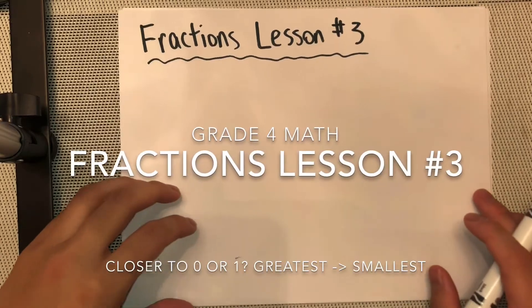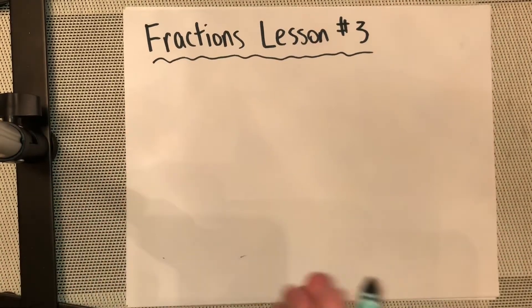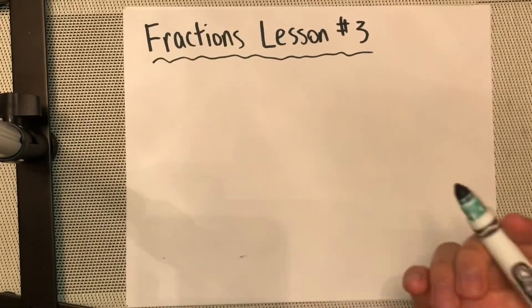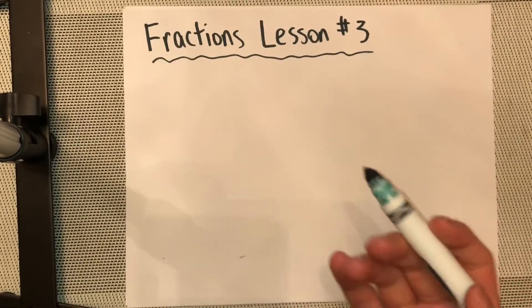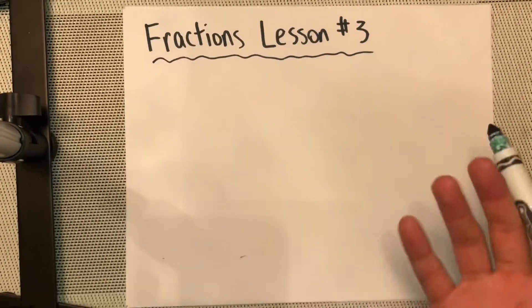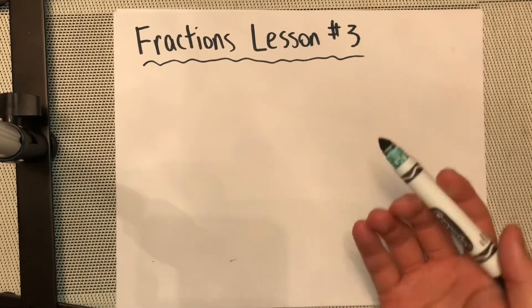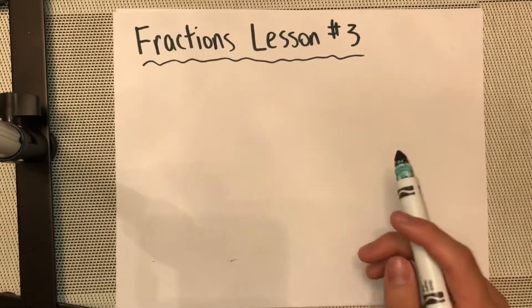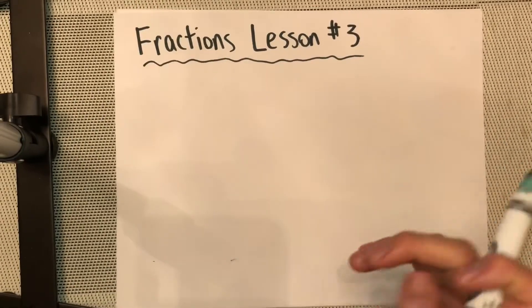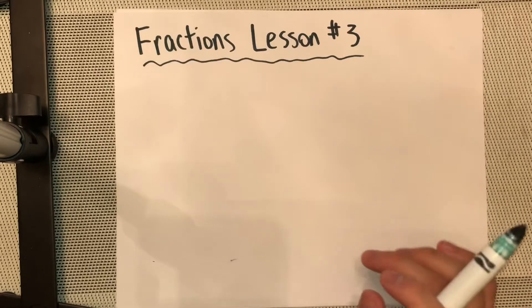Hi grade 4, so for today's math we're going to keep going with fractions. What we're going to try to find is whether a fraction is closer to 0 or closer to 1. Most fractions we're looking at are going to be less than 1, but I want to know: is it closer to 0 or closer to 1? We've talked about this before spring break, so we're going to talk a little bit more about it right now.